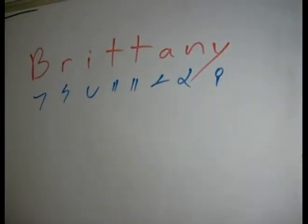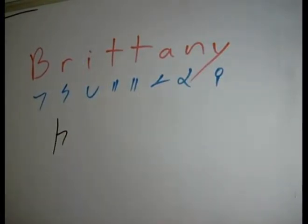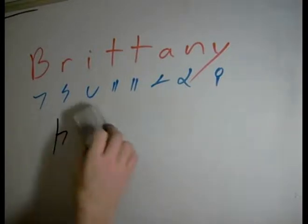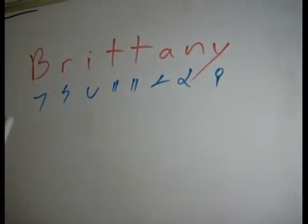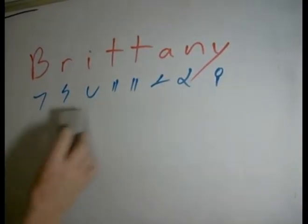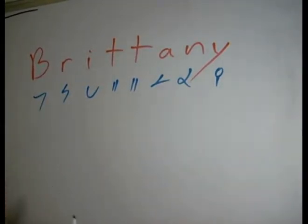Here we're going to do the name Brittany. For starters, we've already discussed this before — this is what a B looks like normally when in the middle of a word, but at the very beginning of a word it's reduced to the simple hook without hanging off of a word line, for aesthetic purposes and to save strokes. So, Brittany.